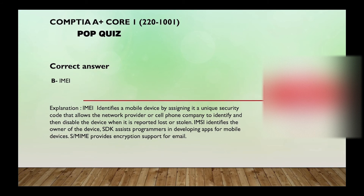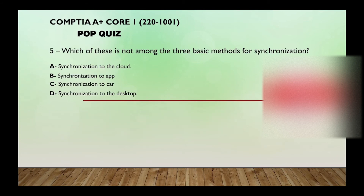IMSI identifies the owner of the device; SDK assists programming to develop apps for mobile devices; S/MIME provides encryption support for email. Number five: which of these is not among the three basic methods for synchronization — synchronization to the cloud, synchronization to an app, synchronization to a call, or synchronization to the desktop?